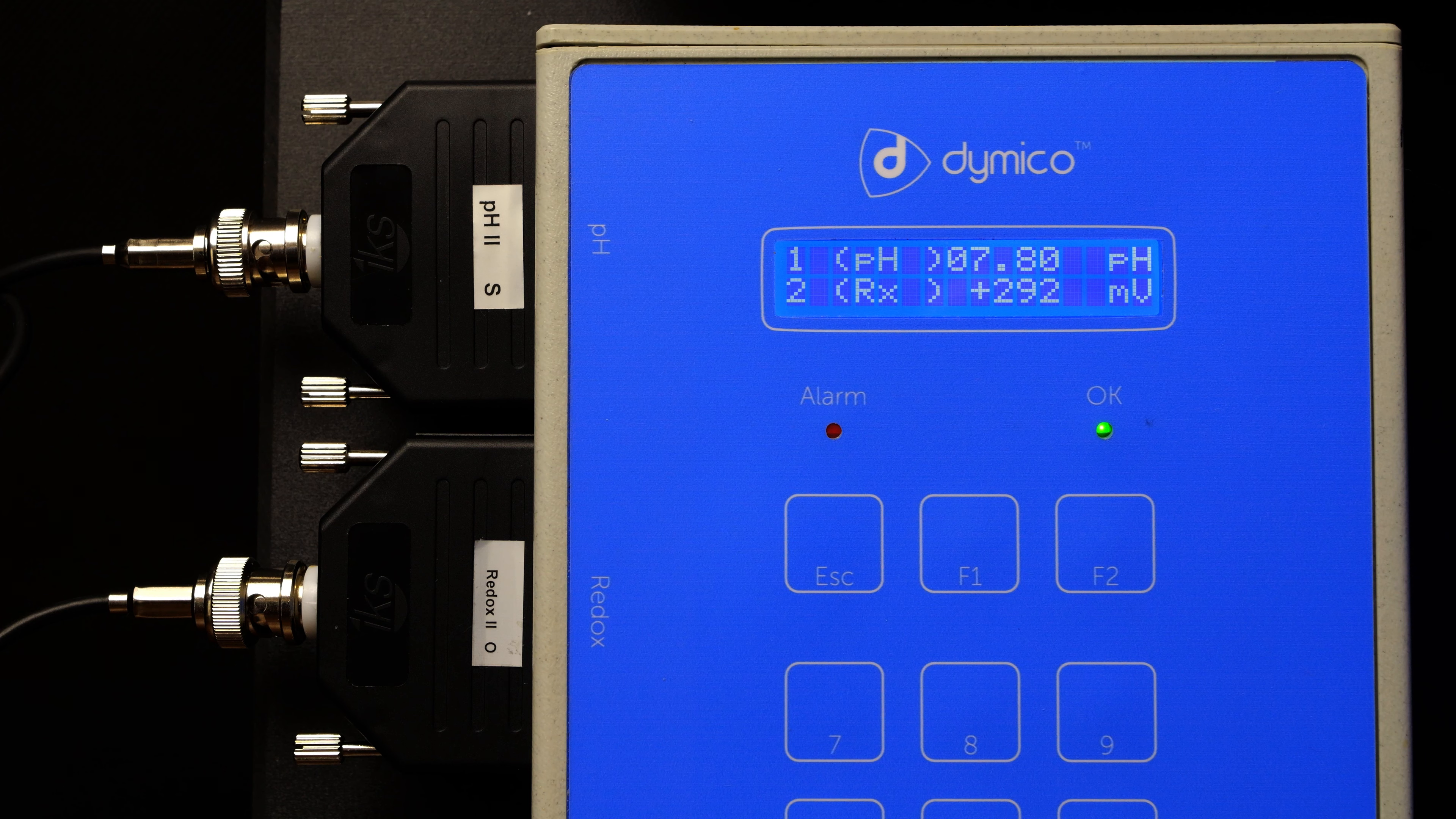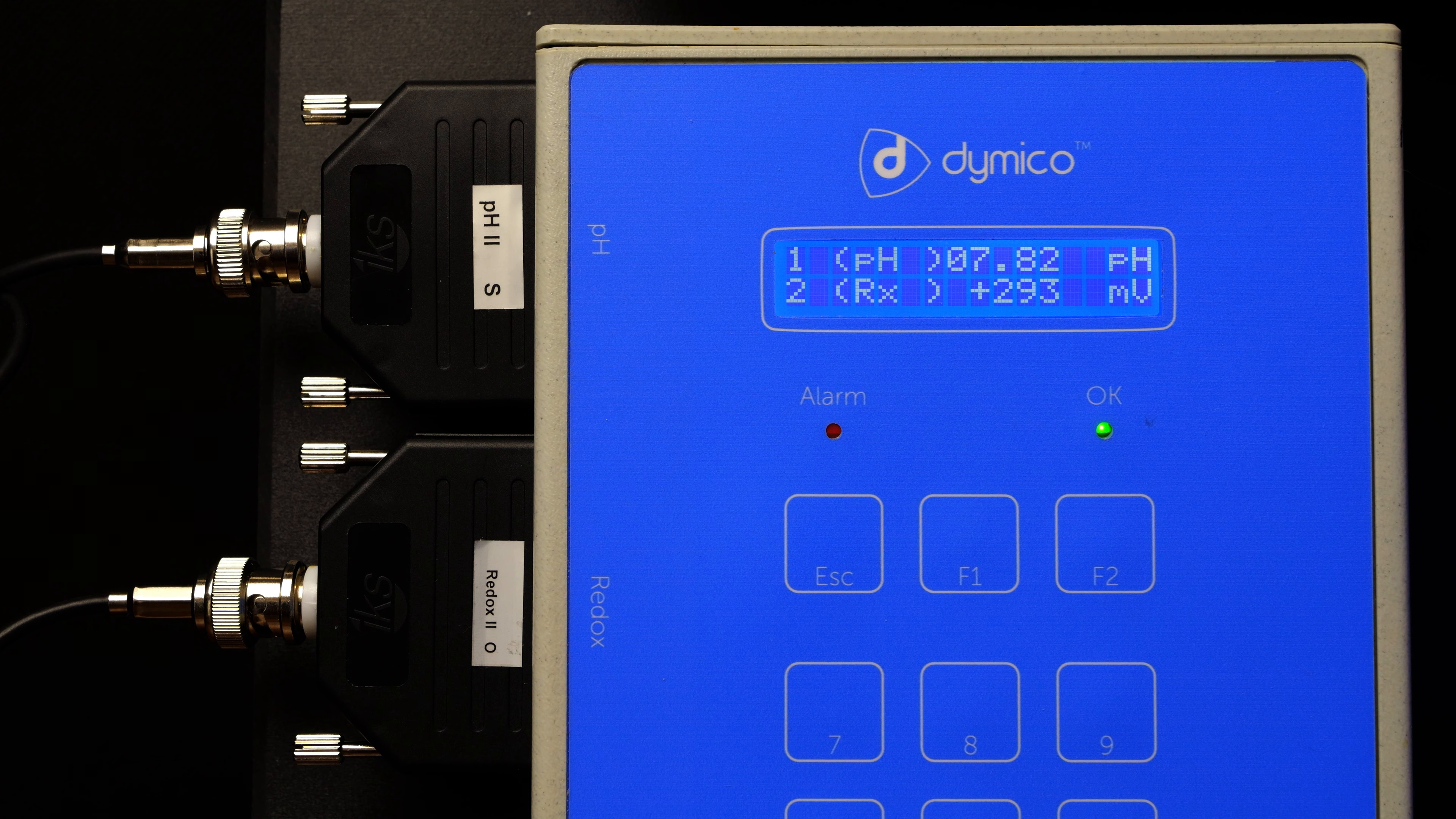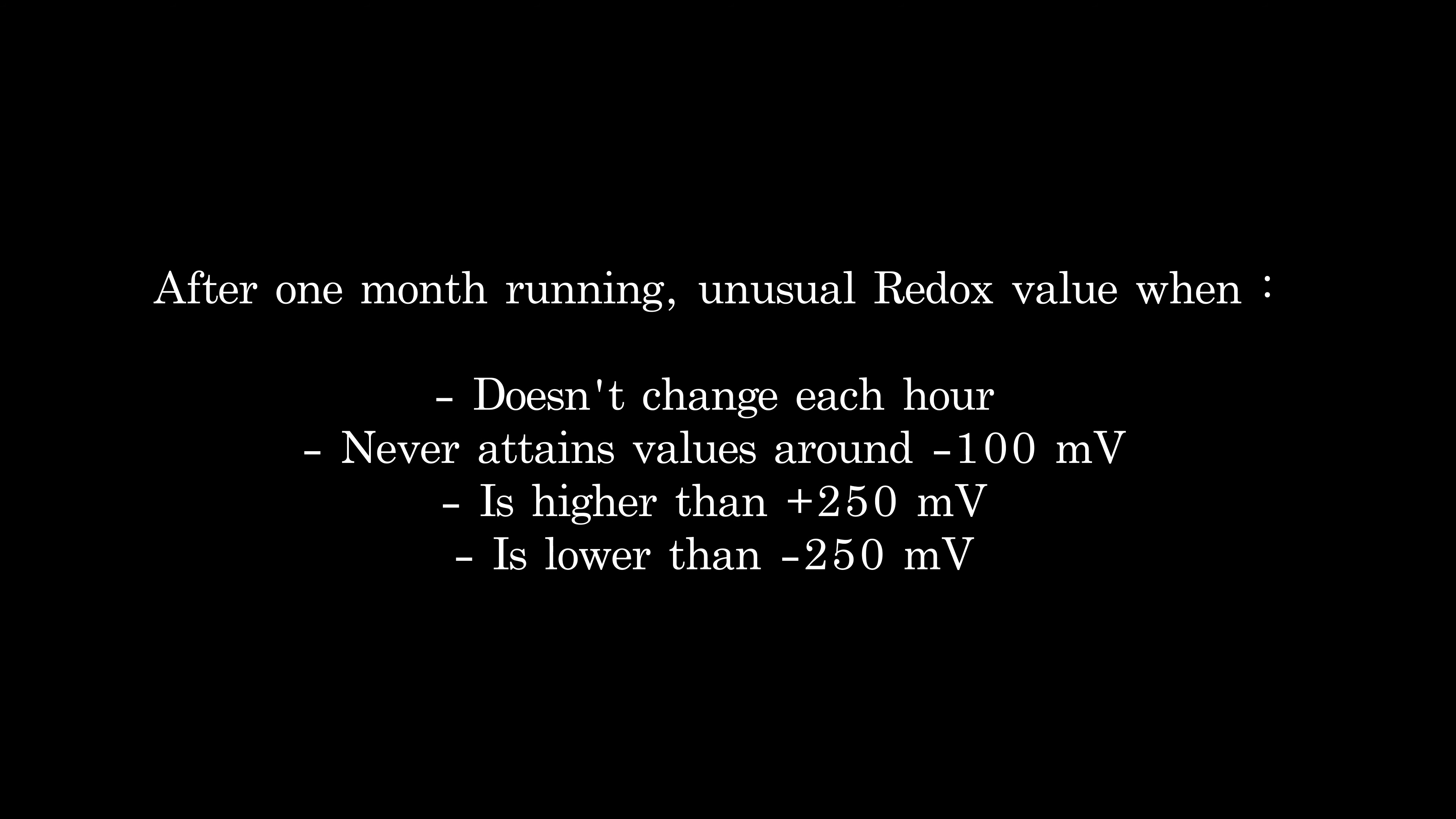You have to see regularly that the redox is around minus 100, but it has to change regularly. For example, on a system running for more than one month, if the redox is staying at plus 150 for a couple hours straight, there is something wrong.